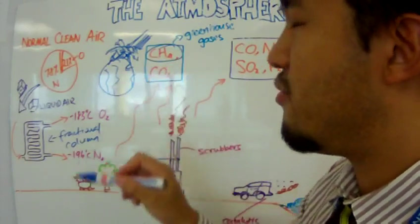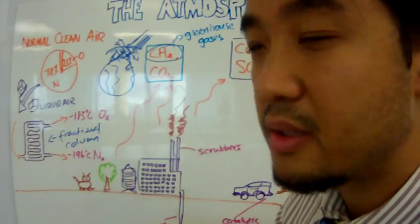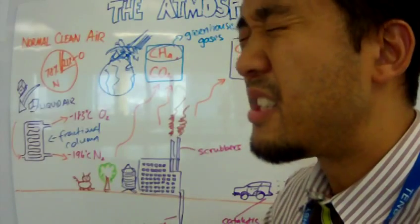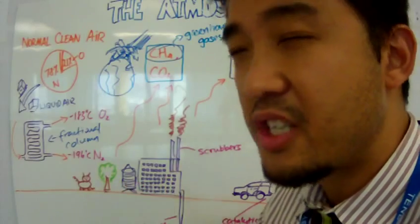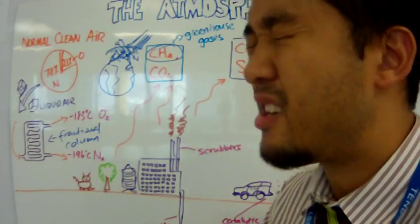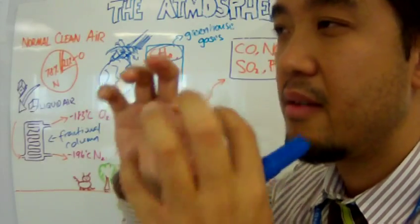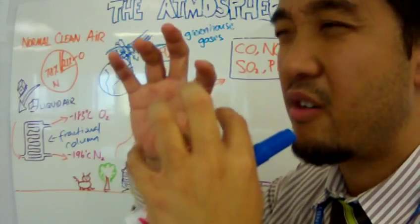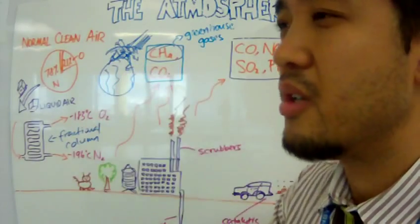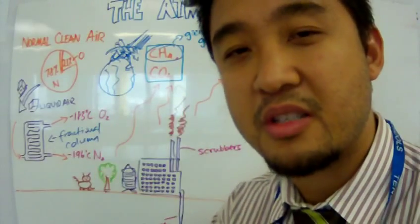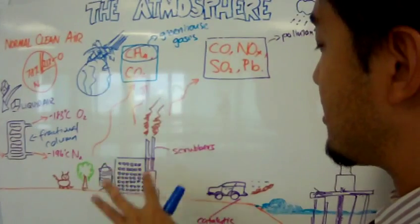Methane is a very, very potent greenhouse gas. That means it traps heat more efficiently than carbon dioxide. That has to do with the way the chemical structures and bonds are, and the way it interacts with infrared radiation hitting the molecule. But that's not what we're going to study at our level. So, these are greenhouse gases.